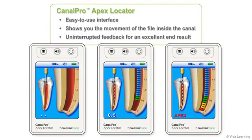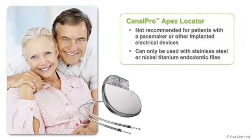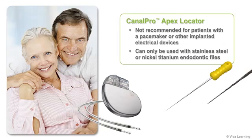The CanalPro Apex Locator gives you an easy-to-use interface that shows you the movement of the file inside the canal from the beginning of the procedure to the end, giving you the uninterrupted feedback you need for an excellent end result. The CanalPro Apex Locator is not recommended for use in patients who have a pacemaker or other implanted electrical devices, and can only be used with stainless steel or nickel-titanium endodontic files.